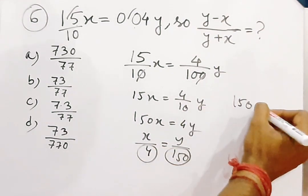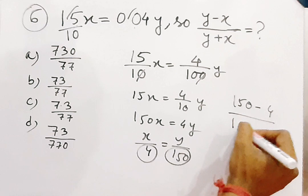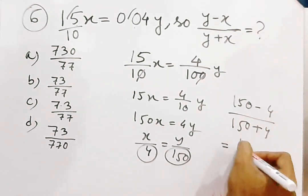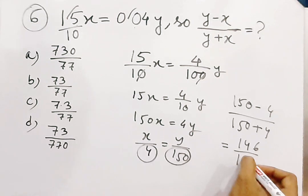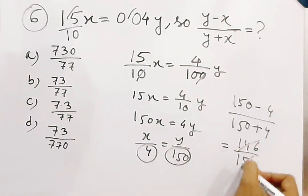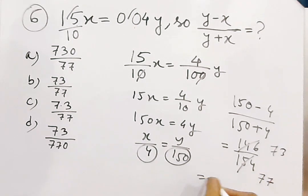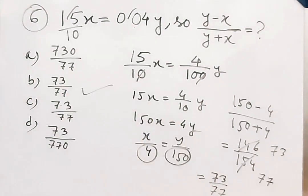Substituting x = 4 and y = 150 into (y - x)/(y + x): we get (150 - 4) by (150 + 4) = 146 by 154. Dividing both by 2 gives 73 by 77. So the result is 73/77, and B is the answer.